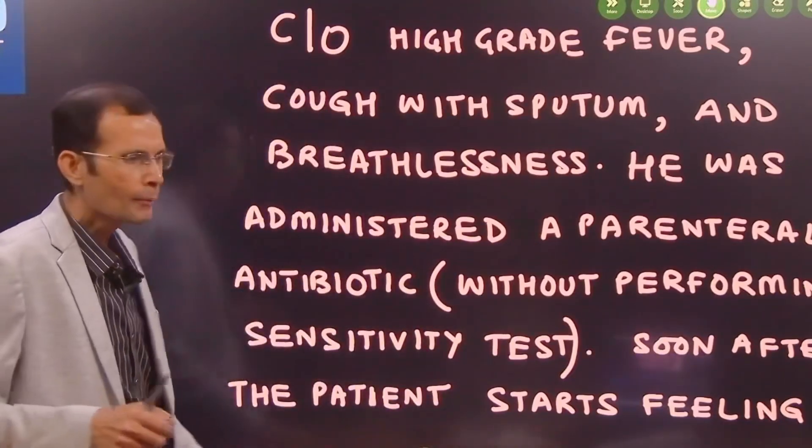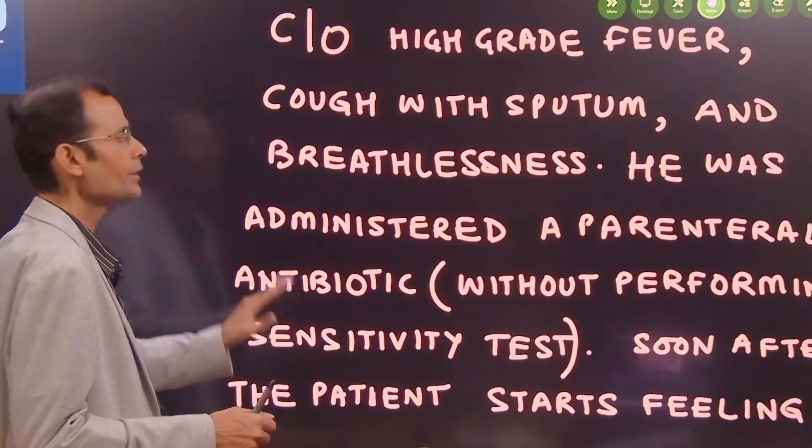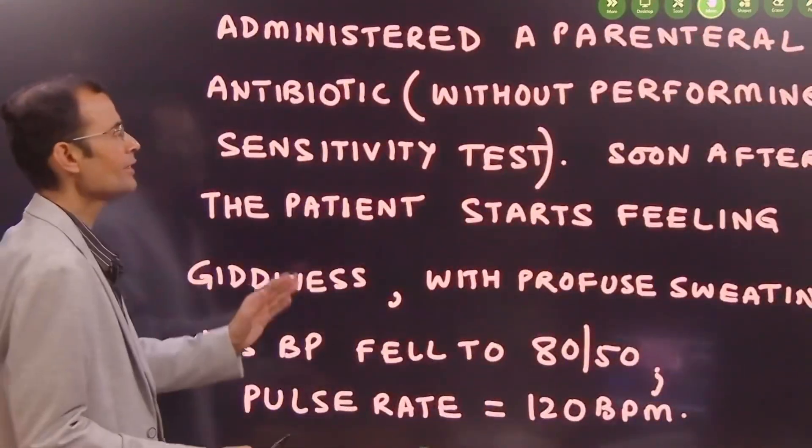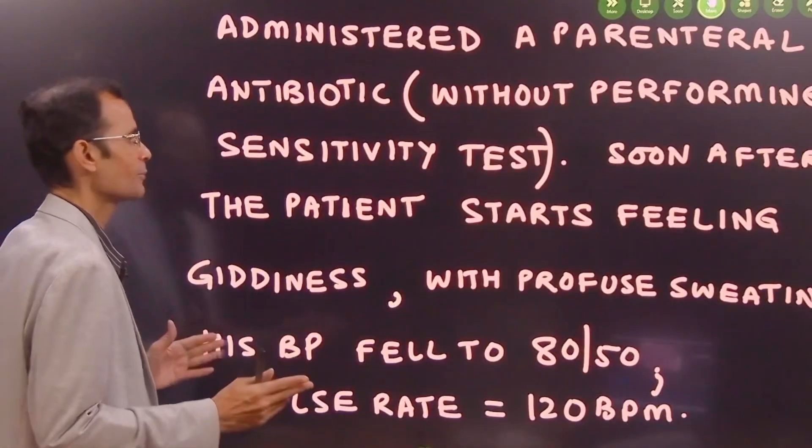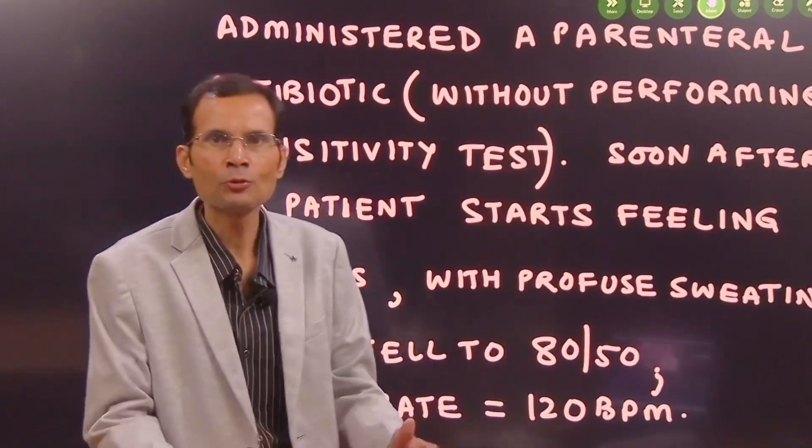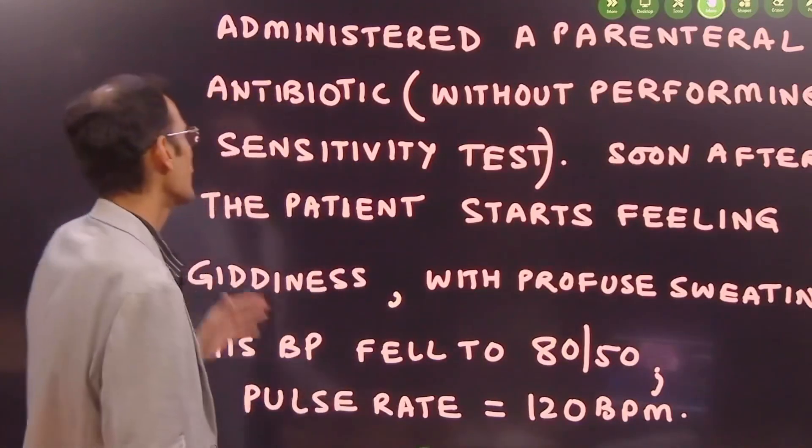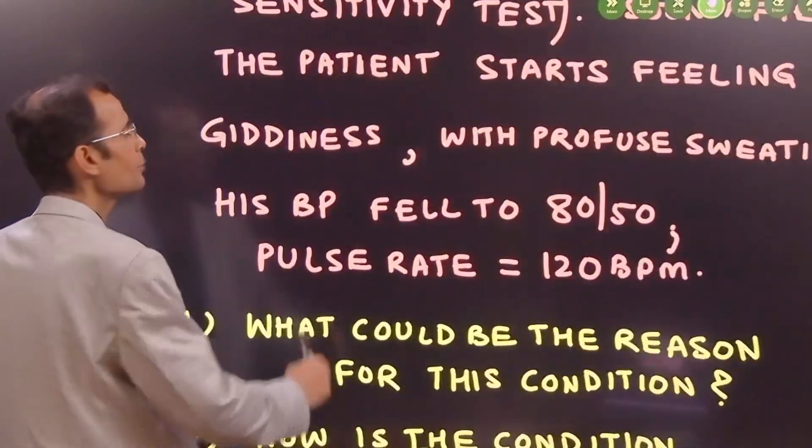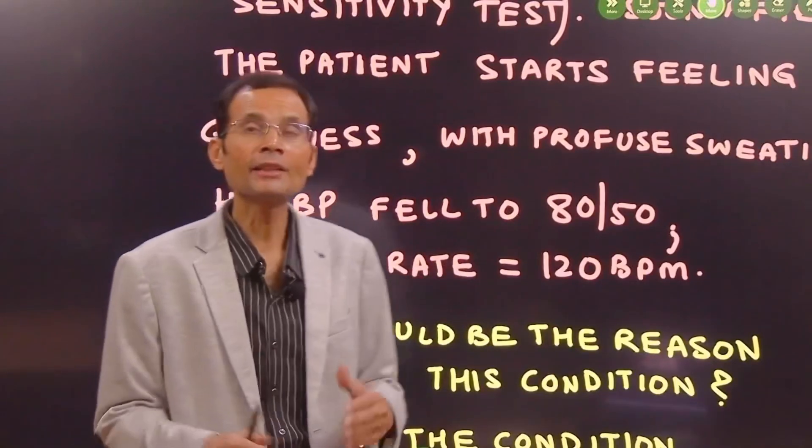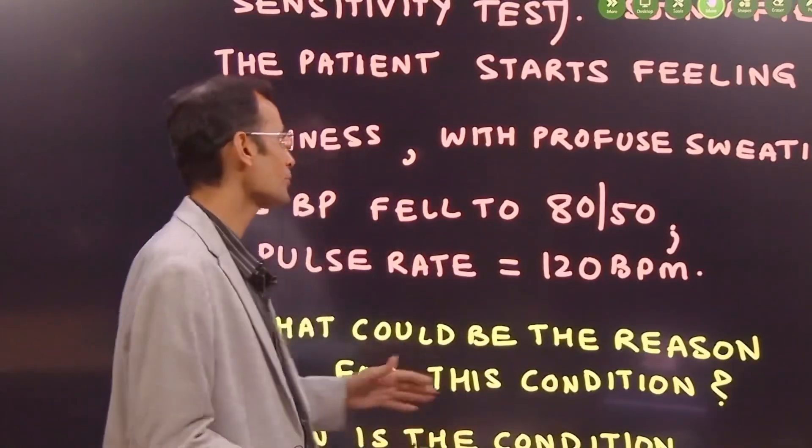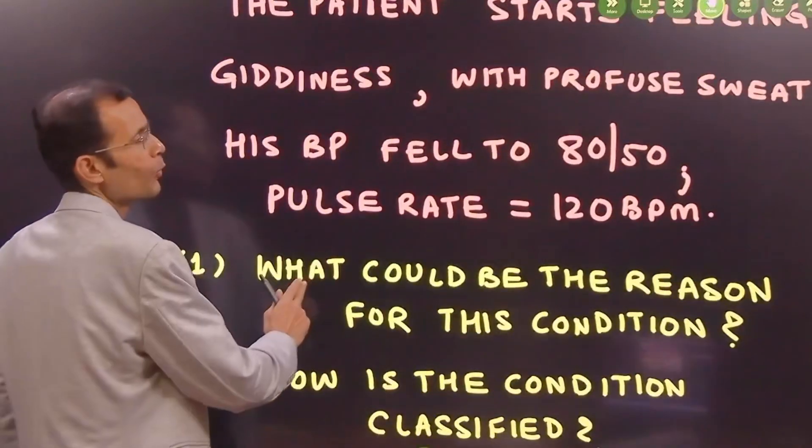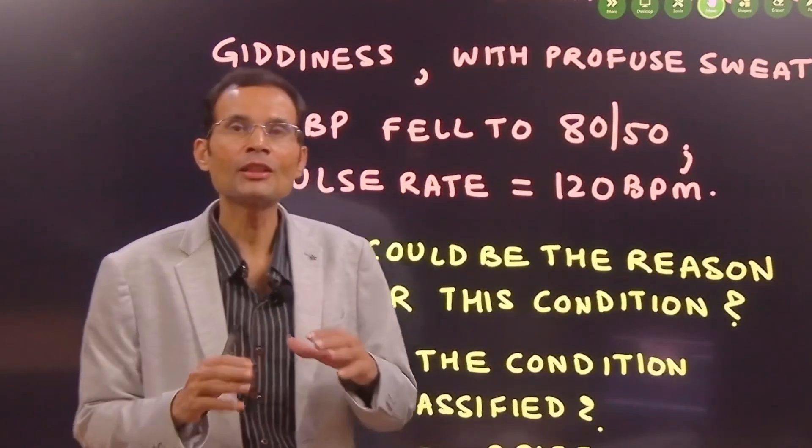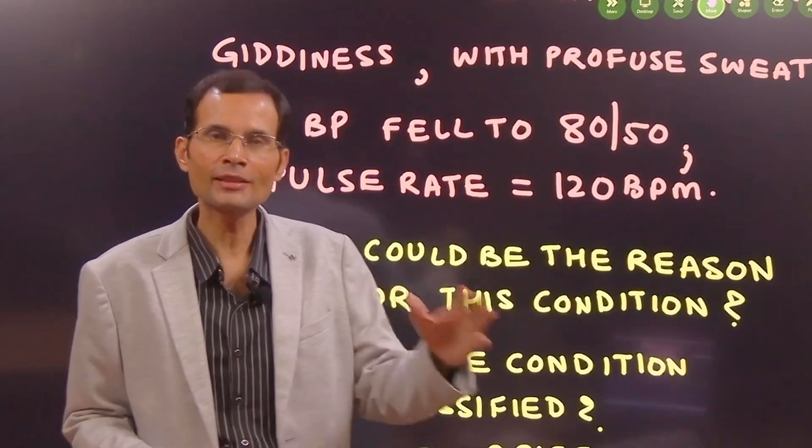Anyways, in this case, antibiotic sensitivity test was not done and therefore soon after the patient starts feeling giddiness immediately within a few minutes - giddiness with profuse sweating and his BP fell to 80 by 50 millimeters of mercury, pulse rate was 120 beats per minute.